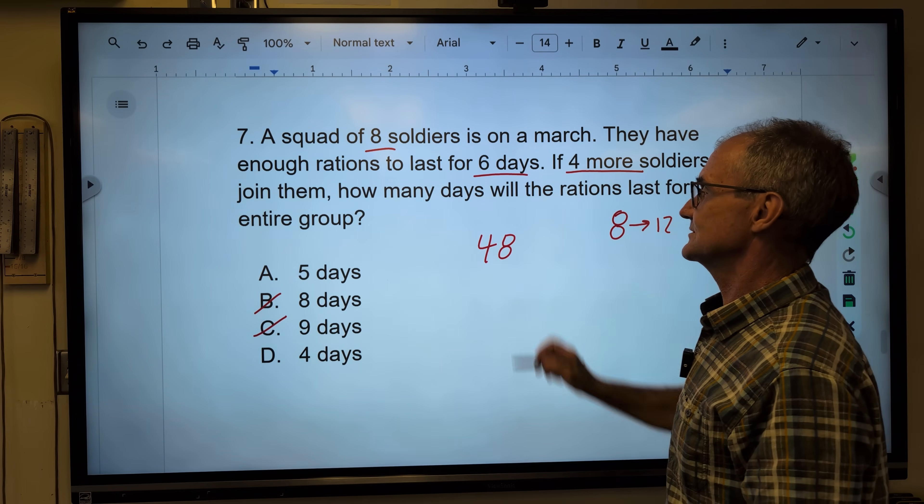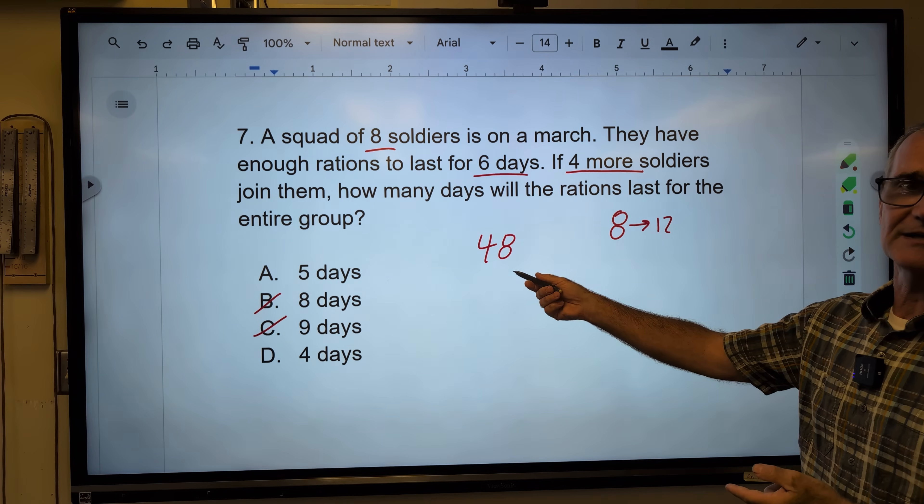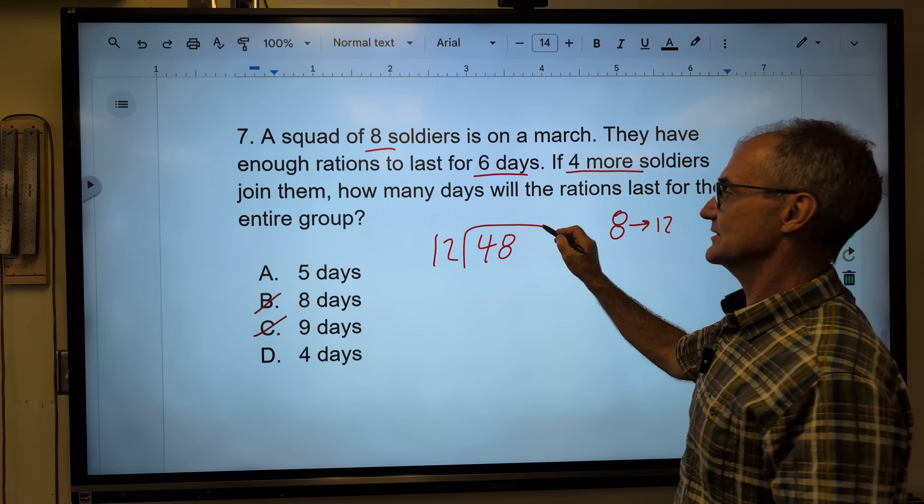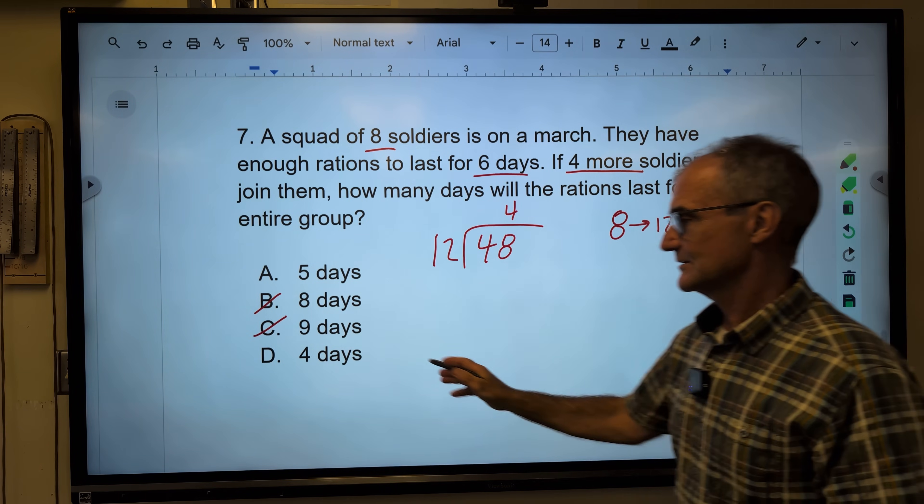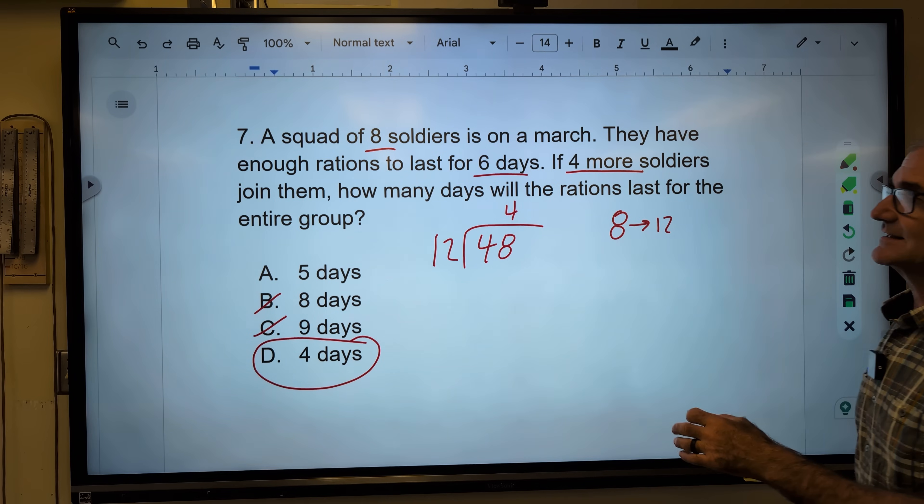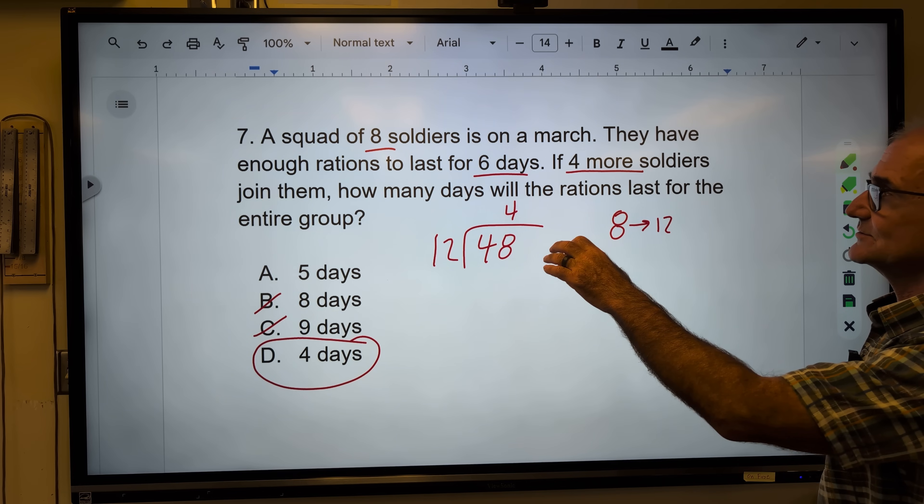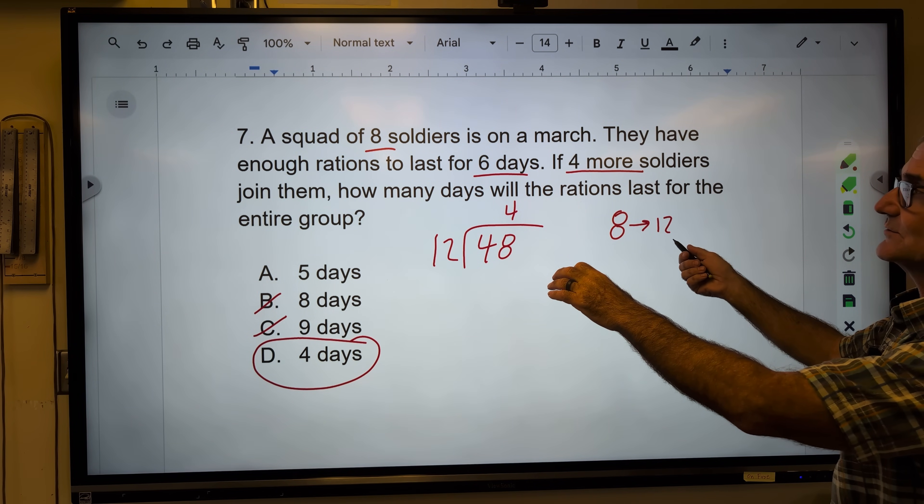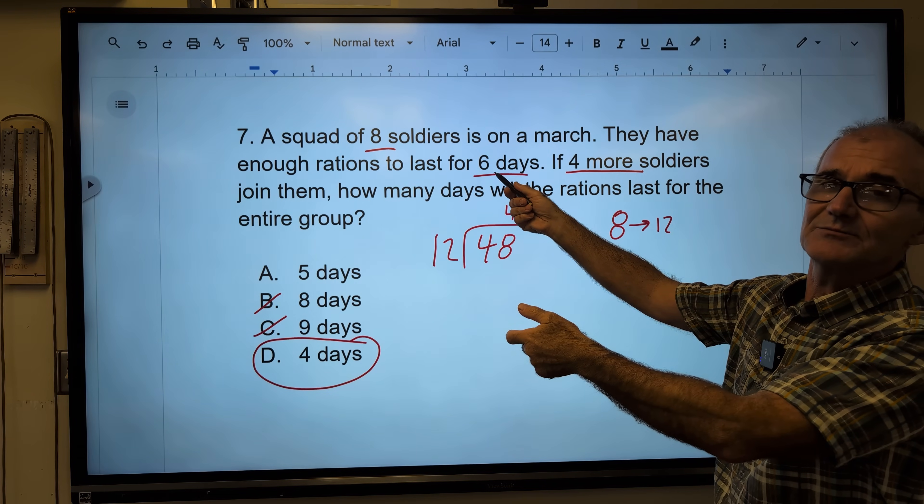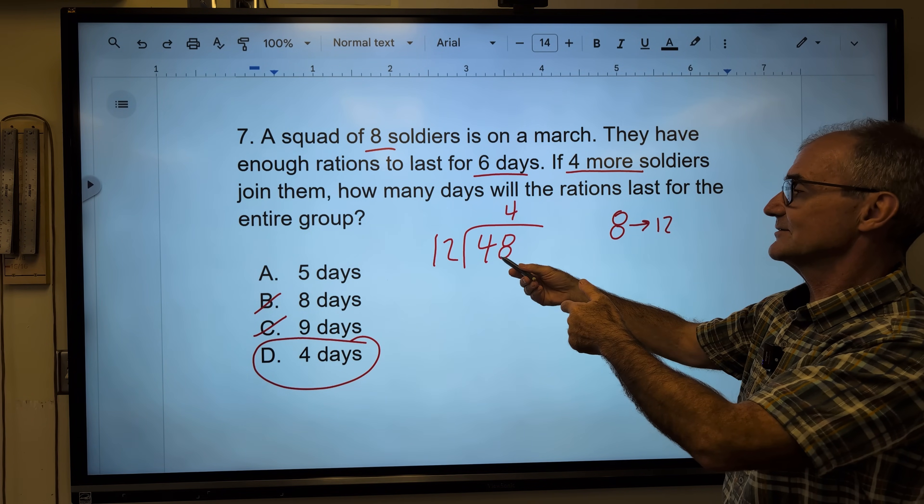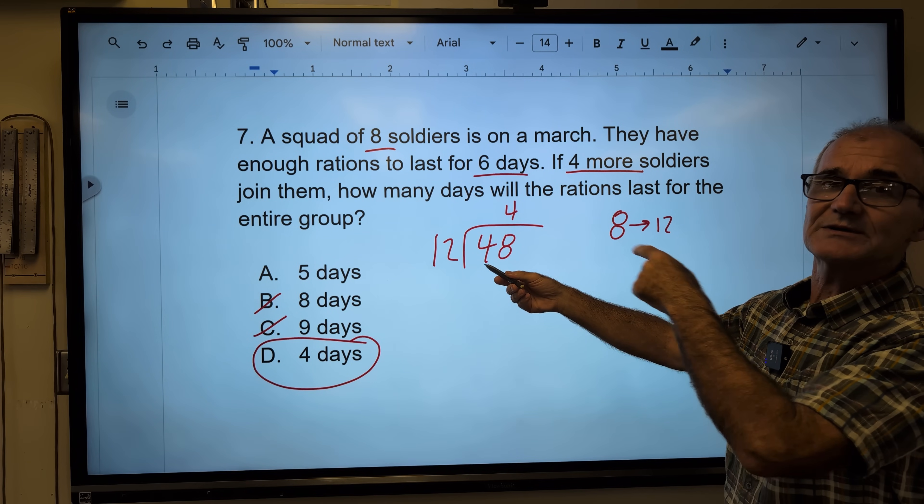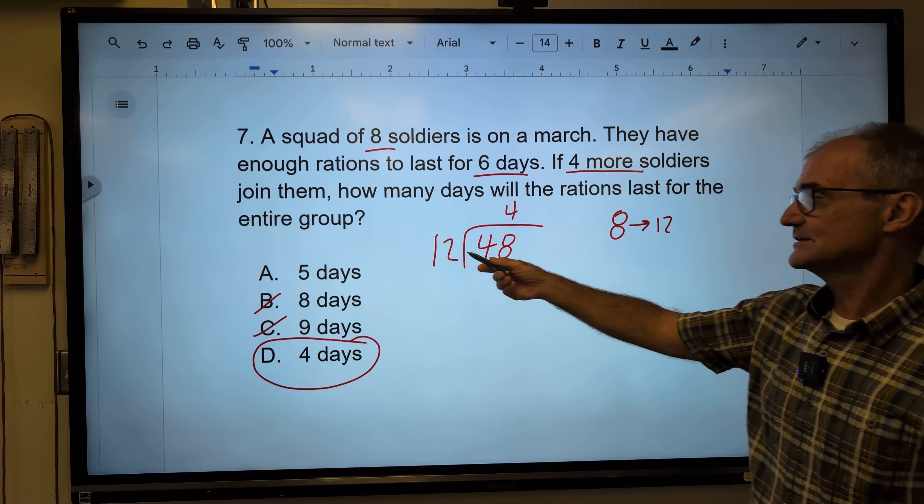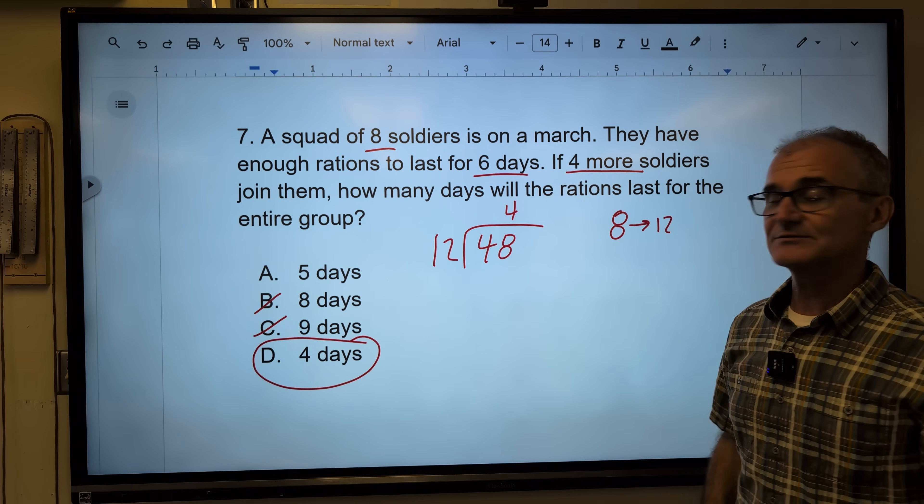I'm going to figure out how many soldier days I have. So I'm going to do 8 times 6 to get 48 soldier days or one soldier for 48 days. But now I have 12 soldiers, so 12 goes into 48 four times. Correct answer, answer D. Let me just kind of think this through again. I got eight soldiers with enough food for six days. There are four soldiers more. So now I got 12 soldiers. How many days does this have to go down by? Well, I'm going to figure out how much food I have for one soldier. How many days of rations do I have? So that gives me the 48. Then I have 12 soldiers. So that 48 divided by 12 gives me four days.